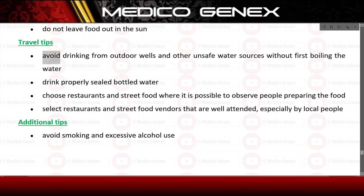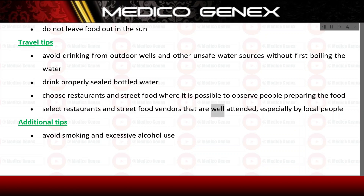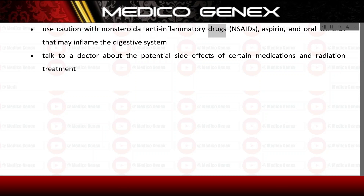Travel tips: avoid drinking from outdoor wells and other unsafe water sources without first boiling the water. Drink properly sealed bottled water. Choose restaurants and street food where it is possible to observe people preparing the food. Select restaurants and street food vendors that are well attended, especially by local people. Additional tips: avoid smoking and excessive alcohol use. Use caution with NSAIDs, aspirin, and oral steroids that may inflame the digestive system. Talk to a doctor about the potential side effects of certain medications and radiation treatment.